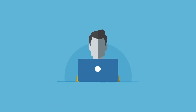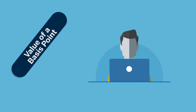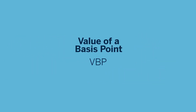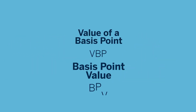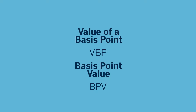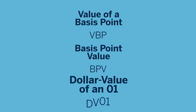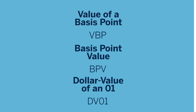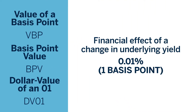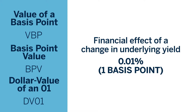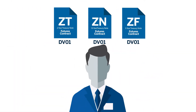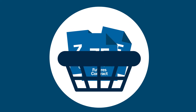Two components used in measuring risk are value of a basis point and modified duration. Value of a basis point, also known as basis point value, or for US dollar products, dollar value of an 01 — all refer to the same thing. This is the financial effect of a one basis point change in the instrument's yield. DV01 can be identified for individual securities or as an average DV01 of a whole portfolio.